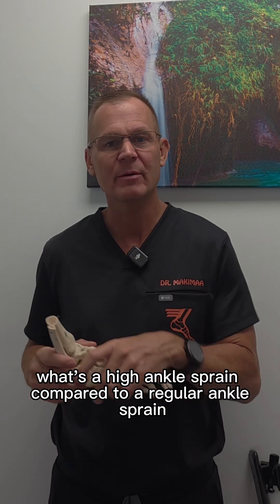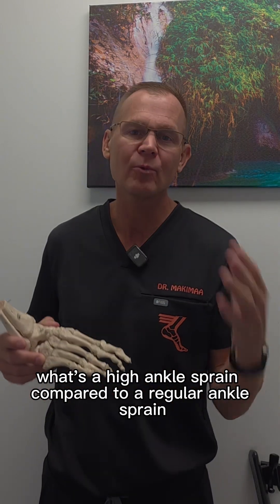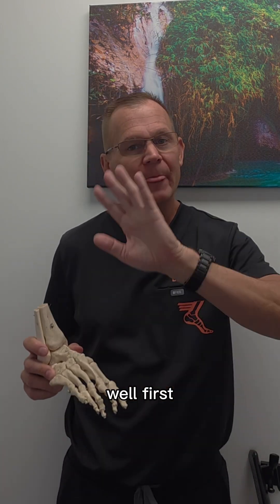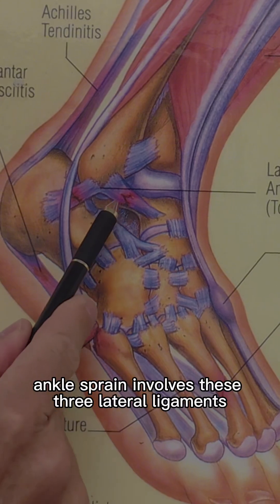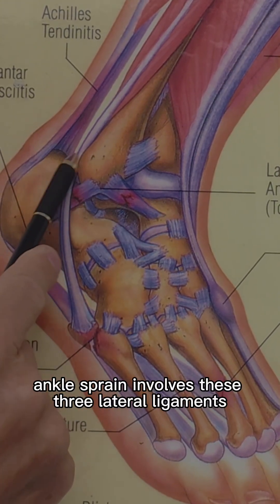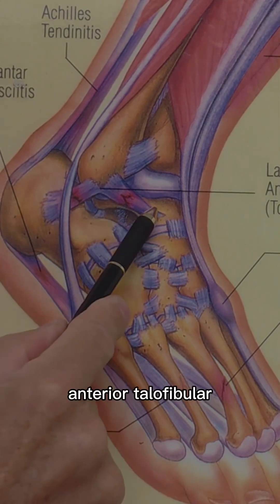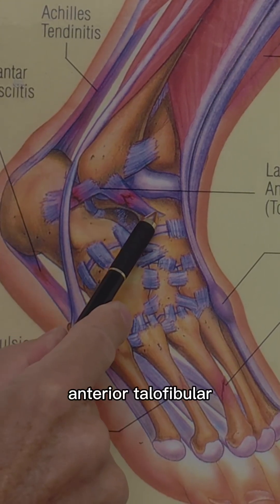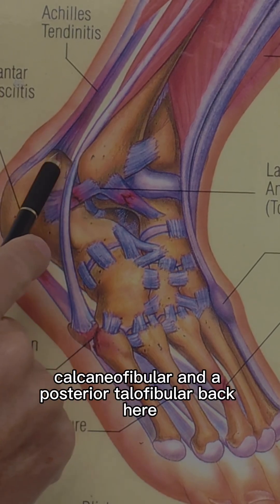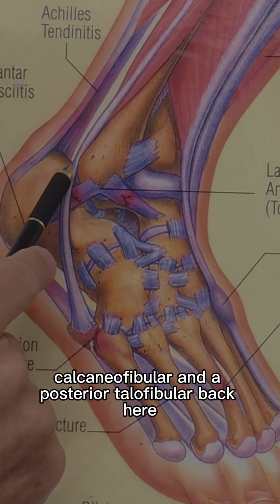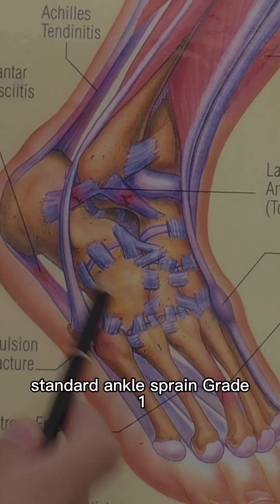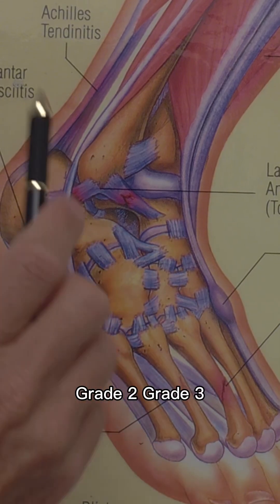What's a high ankle sprain compared to a regular ankle sprain? Well, a regular ankle sprain involves these three lateral ligaments: anterior talofibular, calcaneofibular, and posterior talofibular back here. Standard ankle sprain — grade one, grade two, grade three.